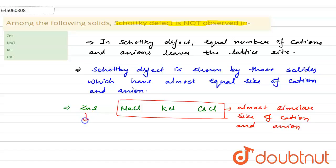But when we talk about zinc sulfide, it contains Zn²⁺ ion and S²⁻ ion. S²⁻ ion is much larger than the Zn²⁺ ion, so